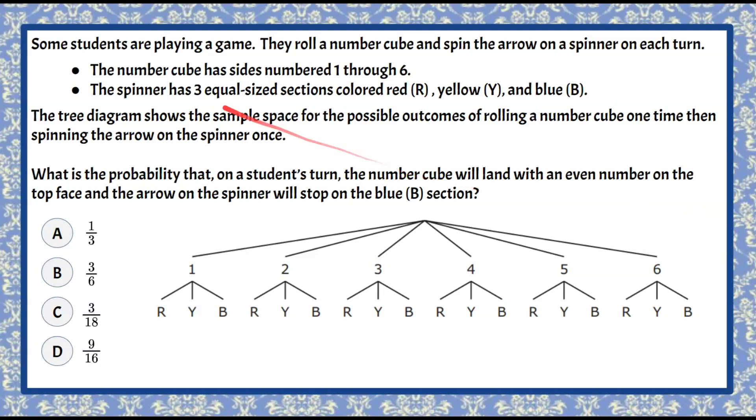Here's our question today. Some students are playing a game. They roll a number cube and spin the arrow on a spinner on each turn. The number cube has sides numbered one through six. The spinner has three equal size sections colored red, yellow, and blue.